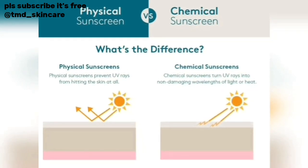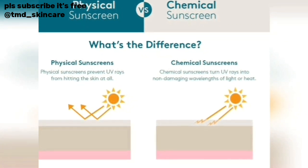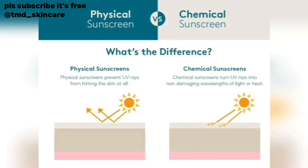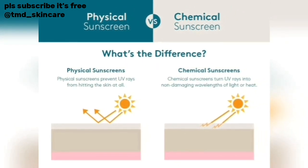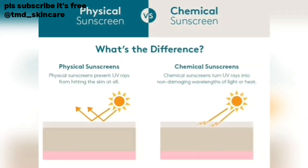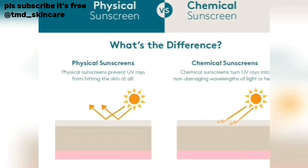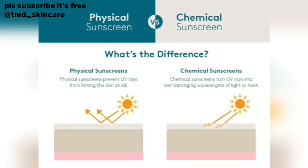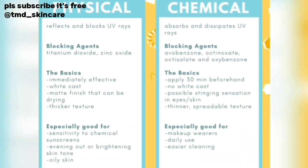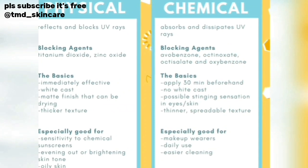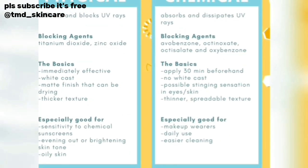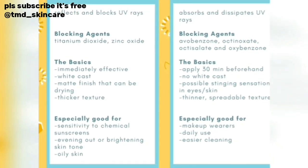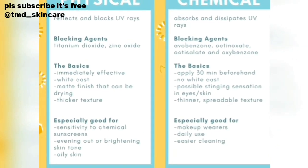There are two main types of sunscreen: physical sunscreen and chemical sunscreen. Physical sunscreen sits on the skin and blocks UV rays directly, while chemical sunscreen converts UV rays to heat. Physical sunscreen contains zinc oxide and titanium oxide — it's mostly for sensitive skin and oily skin as well.